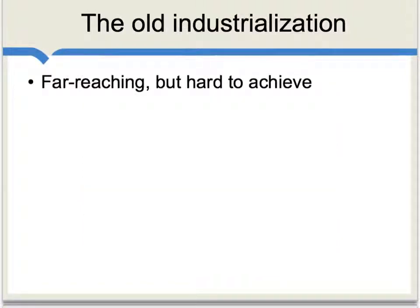You can think of this older model of industrialization as being really quite far-reaching, because it would restructure virtually every aspect of an economy and a society. But at the same time, because it was so far-reaching, it was also hard to achieve. And most developing countries, in fact, did not do it.